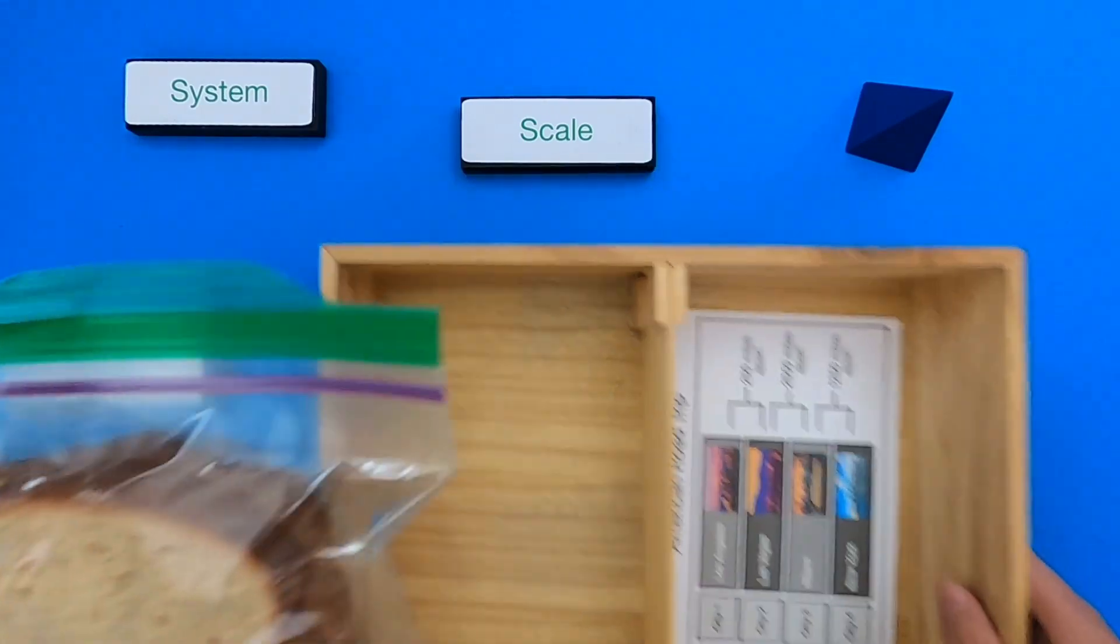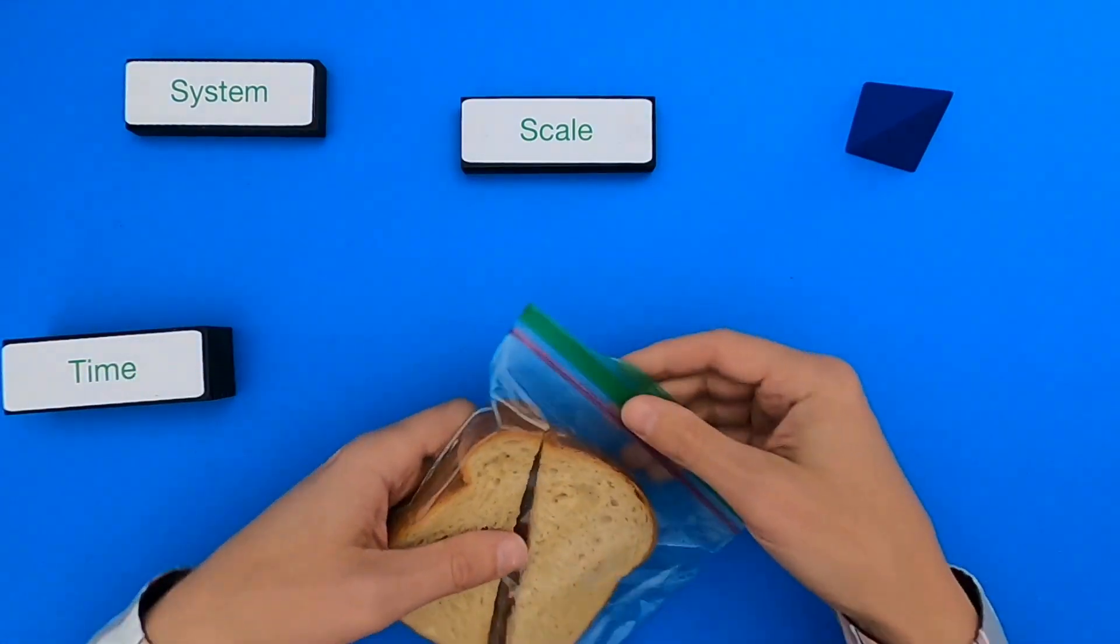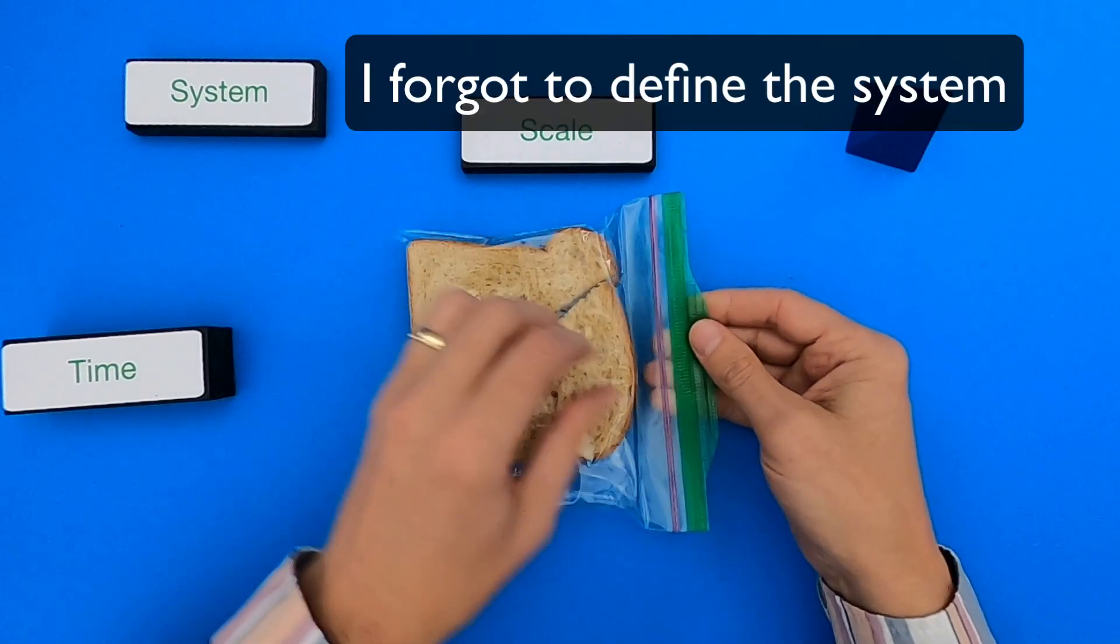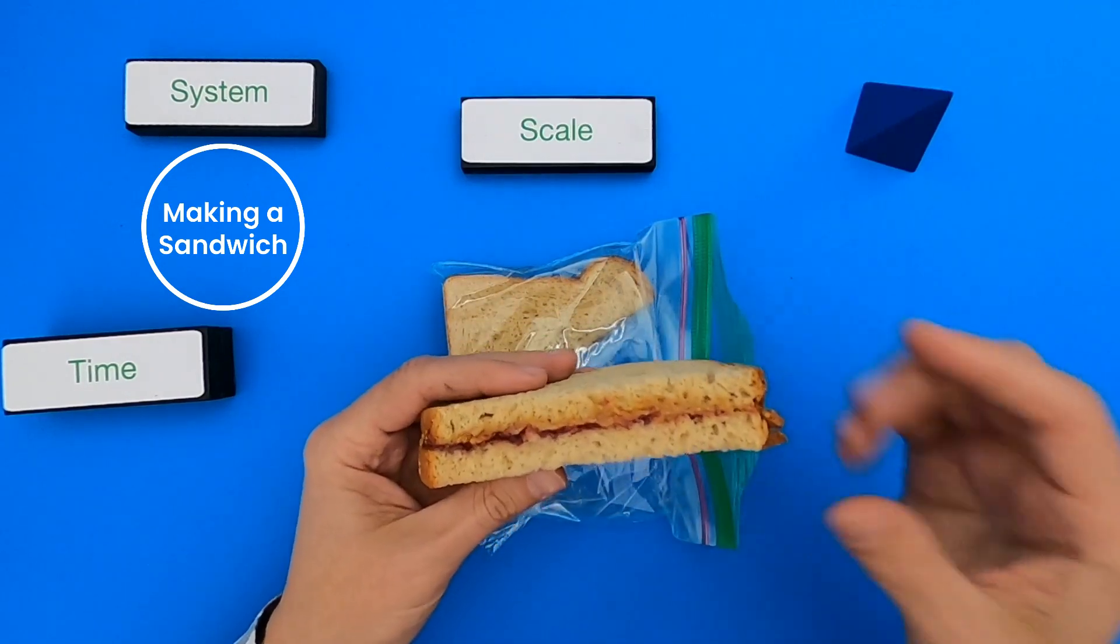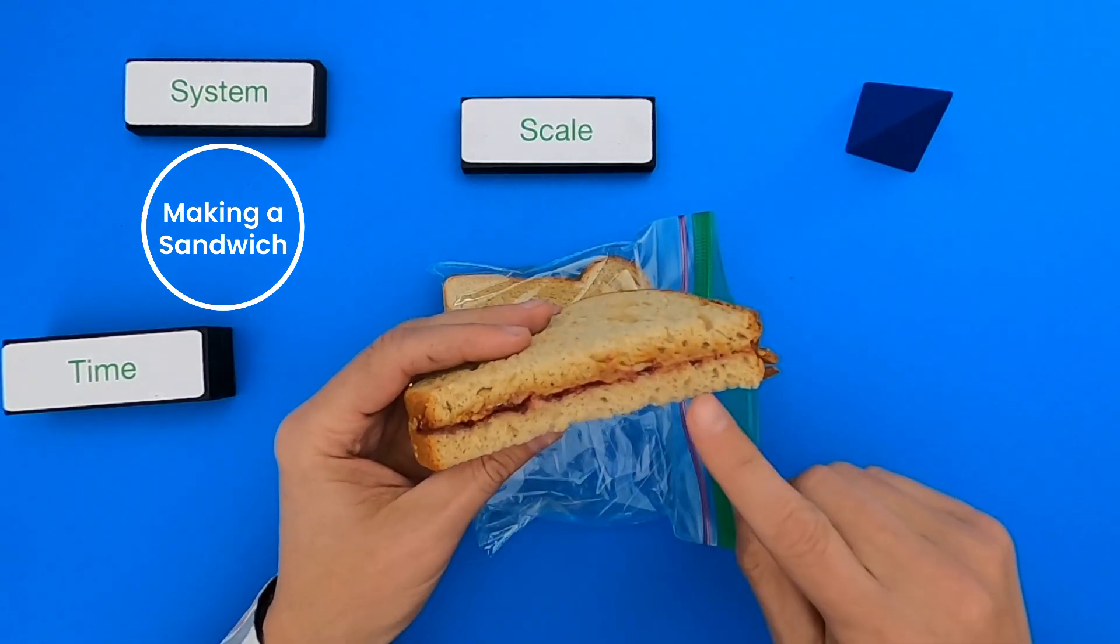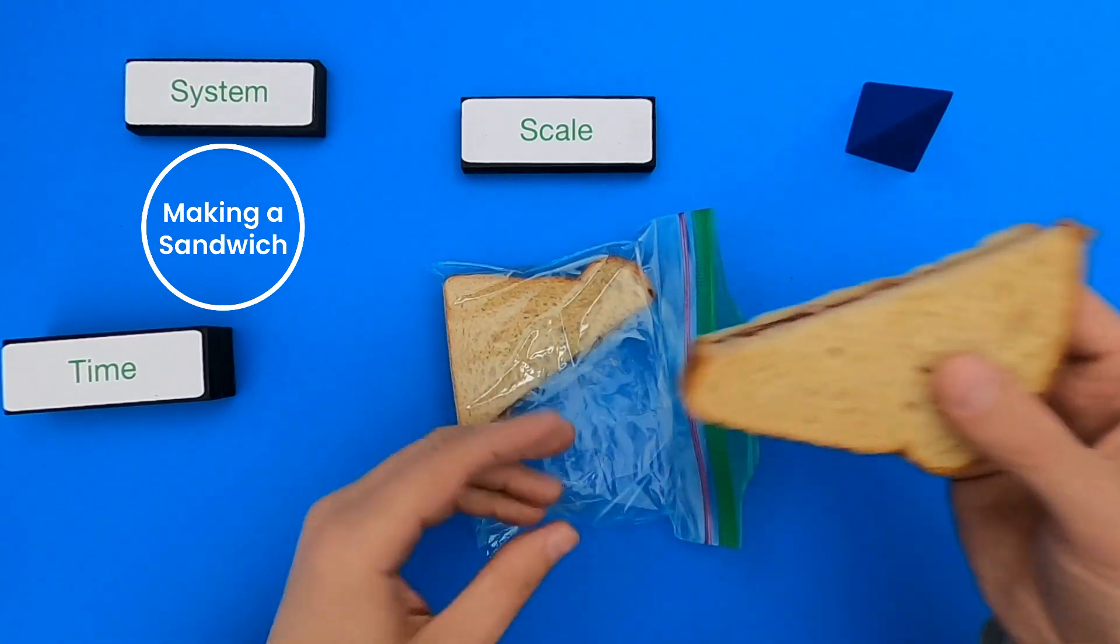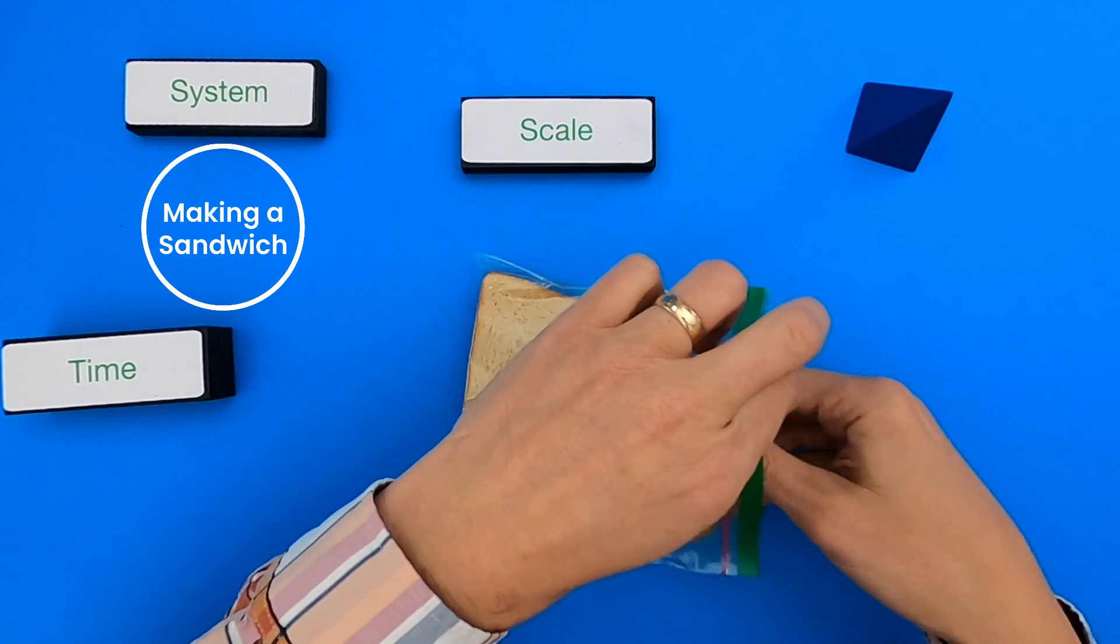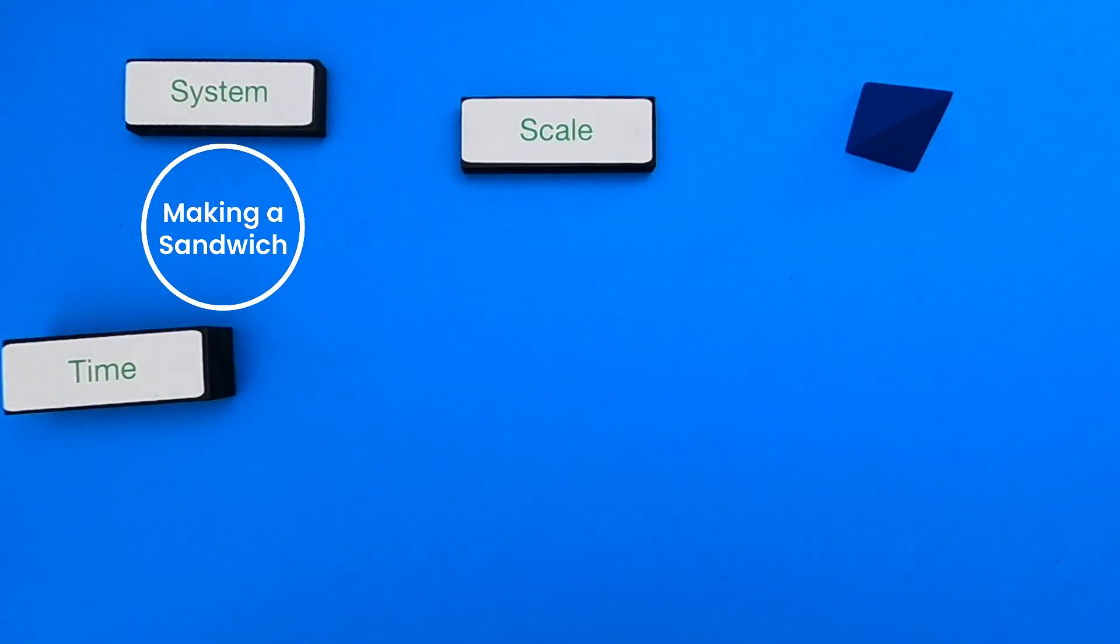Let's start with our first one, which is going to be the creation of a peanut butter and jelly sandwich. The first thing I would want to know is what are the events that took place in the formation of this sandwich. You can see that we've got bread, peanut butter, jelly, and then bread was added and then the whole thing was cut in half. So we're going to create a time scale model of this creation of the sandwich.